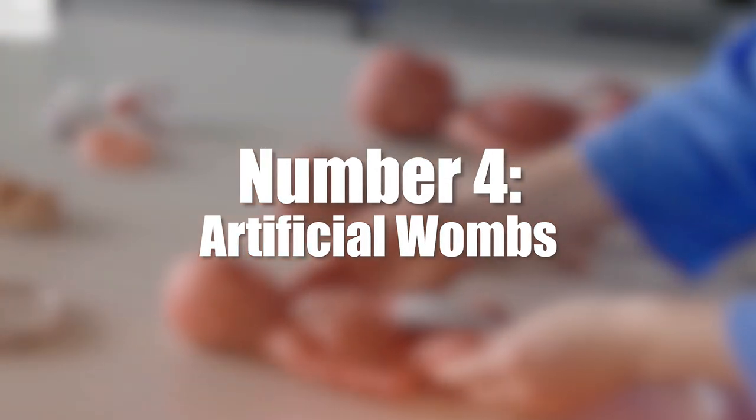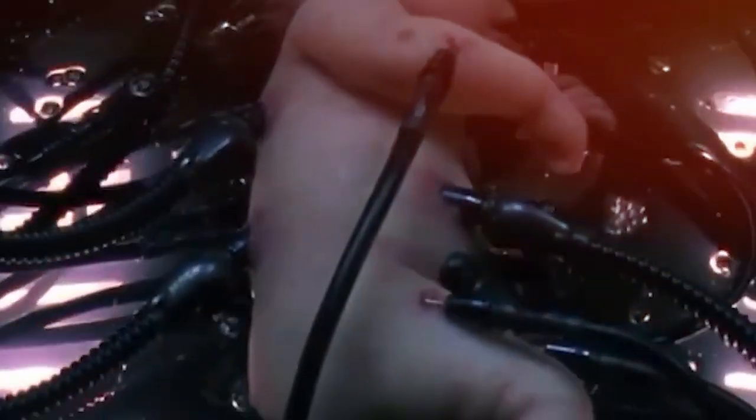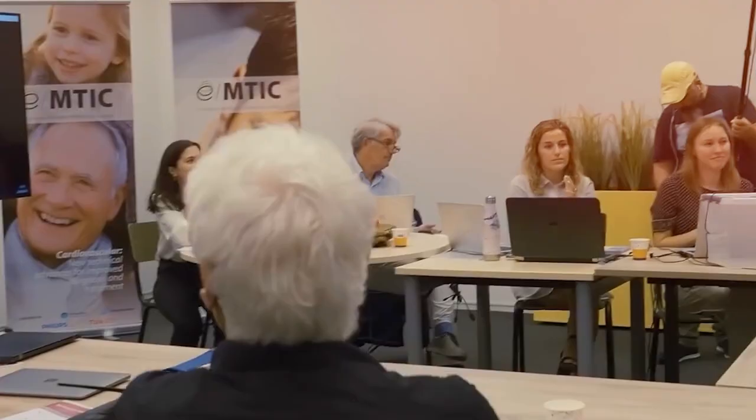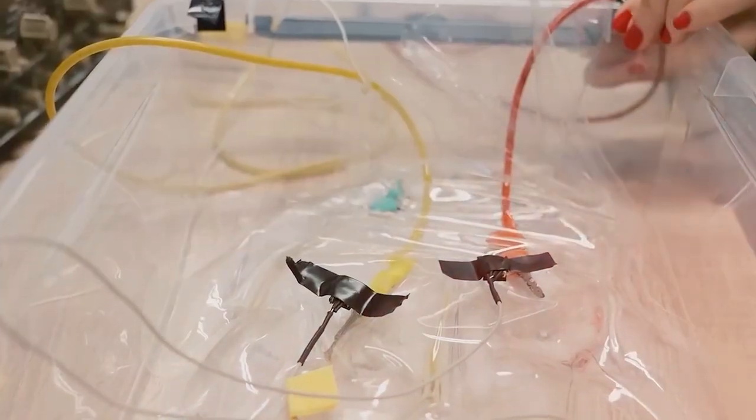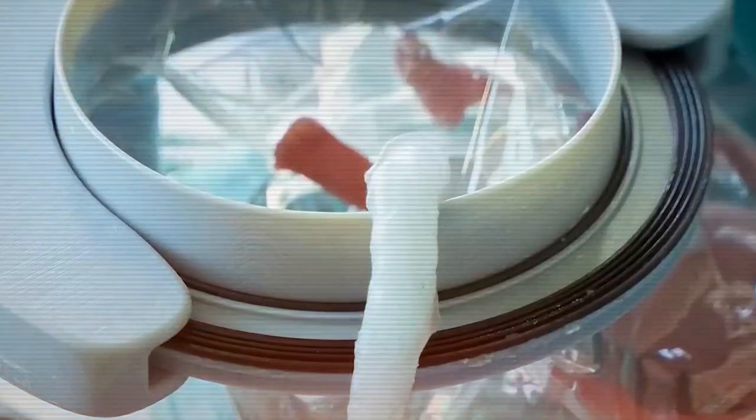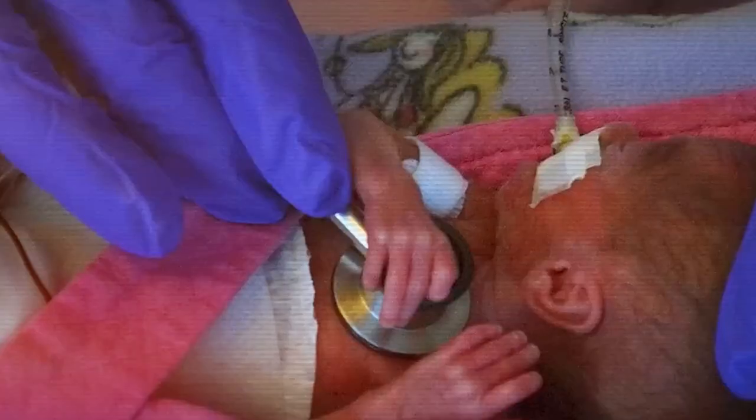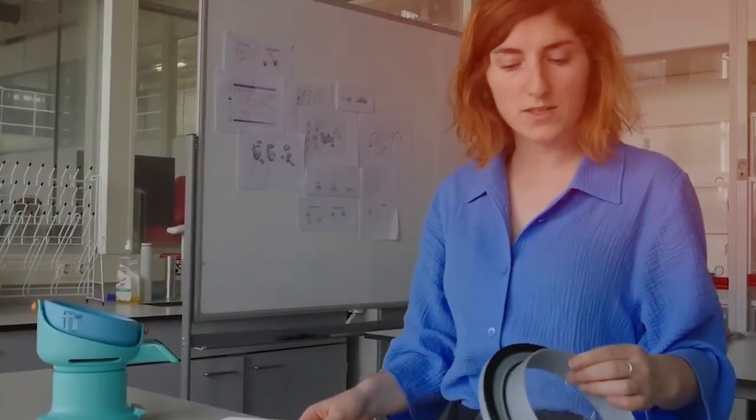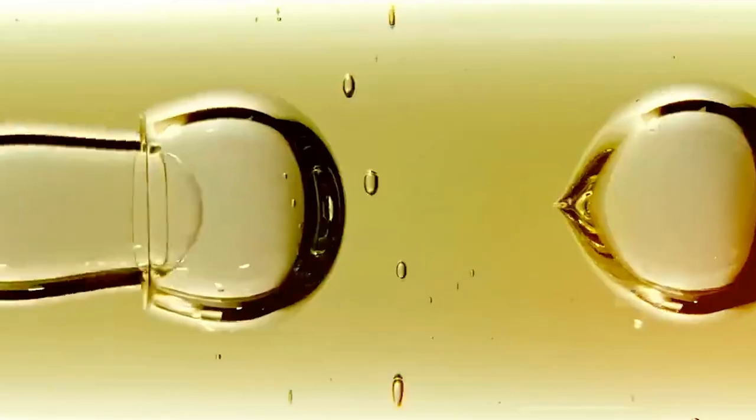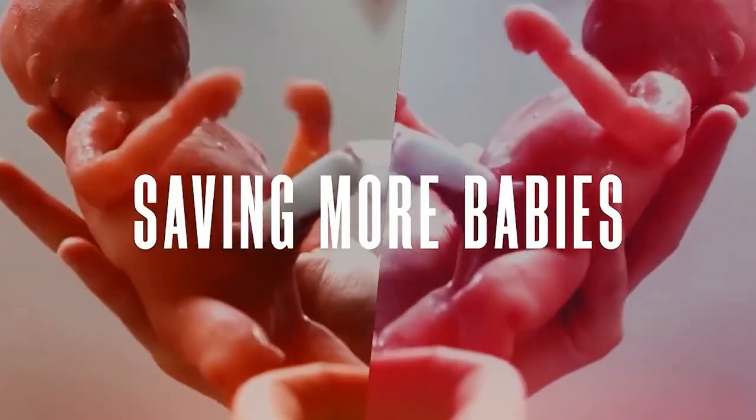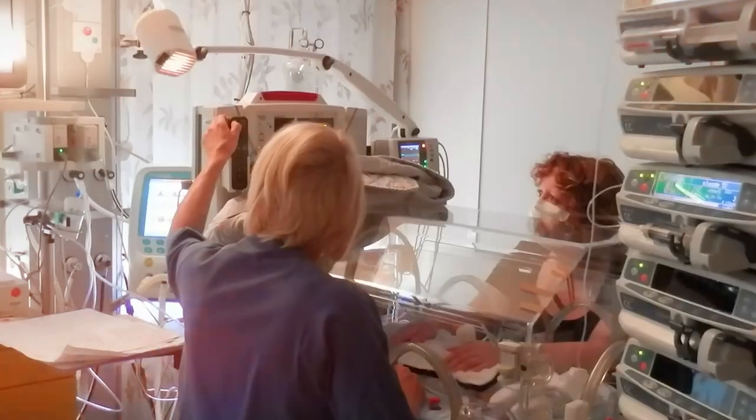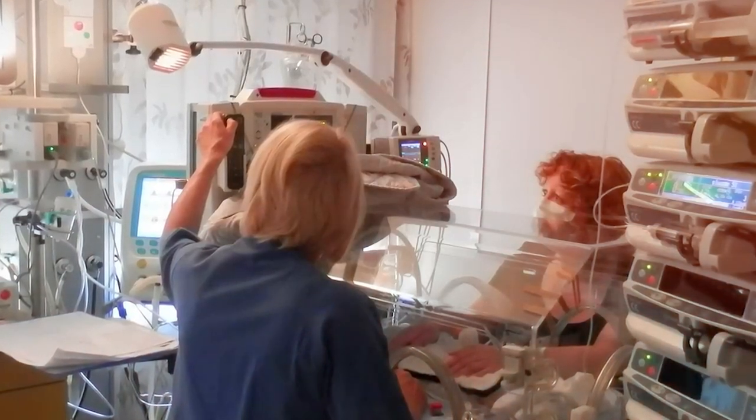Number 4, artificial wombs. Artificial wombs are becoming reality. These special containers can grow babies outside the human body. Currently, scientists are developing biobags to help premature babies survive by mimicking womb conditions. In the future, artificial wombs could help people who can't carry pregnancies, allowing them to have babies without surrogates. Even wilder, scientists envision growing babies in space for long missions or colonizing other planets. This technology raises big questions about pregnancy, childbirth, and family creation. It might even change our understanding of what it means to be human. Artificial wombs are a mind-blowing innovation that could revolutionize how we bring new life into the world.